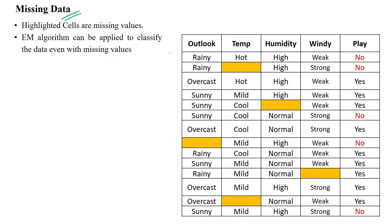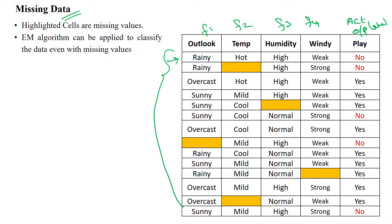Now, what is missing data? In this given dataset, we have feature 1, feature 2, feature 3, feature 4, and the actual output label. Sample 1 has all feature values, but sample 2 is not having the feature 2 value — so this is missing. Similarly, in some samples certain feature values are missing. This is called missing data in the given dataset.